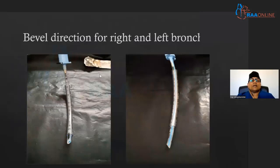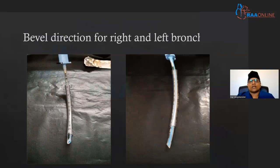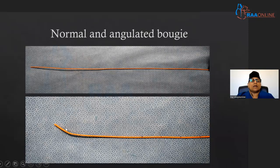When you need to move the tube to one side, you can rotate the bevel. If you rotate the bevel, you can go to the right side, or turning it in the opposite direction will direct it to the left side. Another common technique followed by all of us is turning the head to the opposite side. You can also use an angulated bougie to aid your endobronchial intubation — you can angulate the tip, and this is a much better mechanism to direct your tube to either the right or left side.